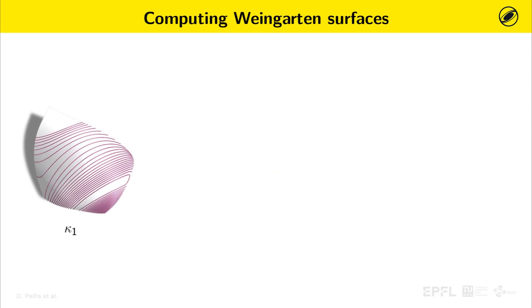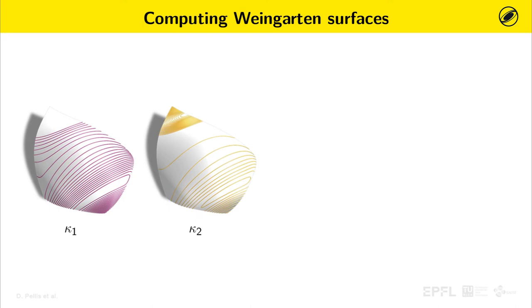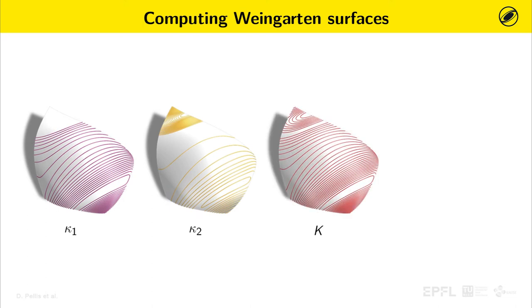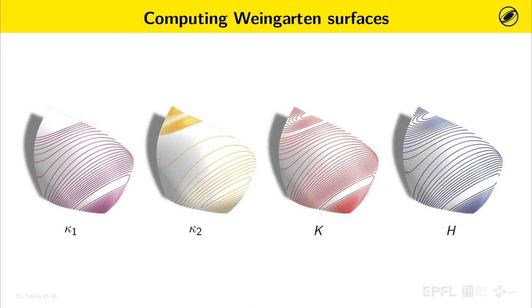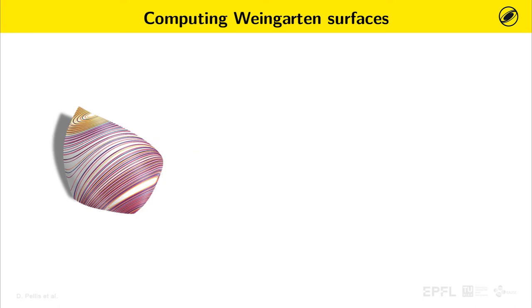To compute generic Weingarten surfaces, we first observed that for these surfaces, the isolines along which are constant the principal curvature K1, the principal curvature K2, the Gaussian curvature K, and the mean curvature H all run parallel to each other. To determine a Weingarten surface, it is sufficient, for instance, that the isolines of Gaussian curvature K and mean curvature H run parallel on the surface.